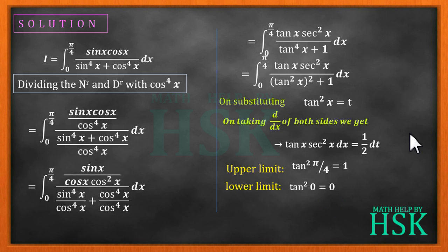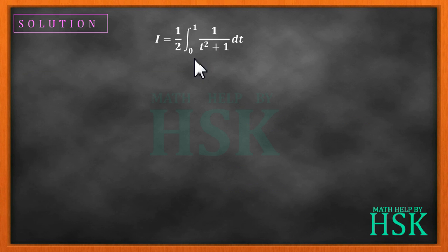I'm going to get the value of I as equal to 1 by 2 times integration of 1 upon t square plus 1, dt from 0 to 1. Now integration of 1 upon 1 plus t square dt is equal to tan inverse of t, this 1 by 2 as is, and limits are placed 0 to 1.